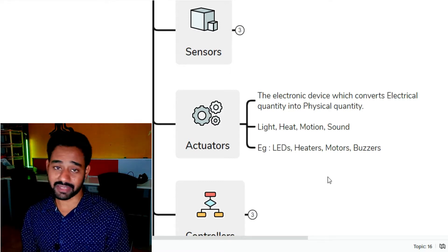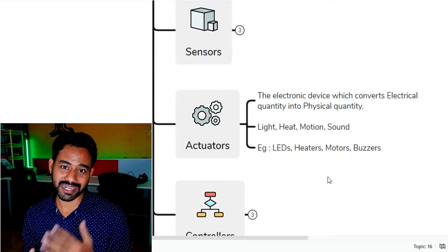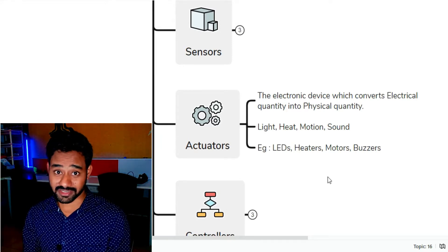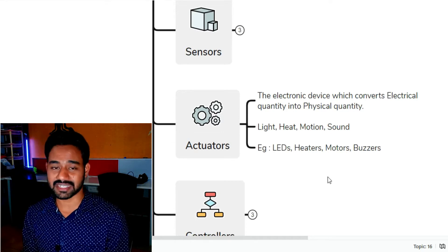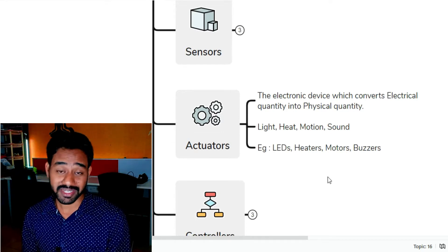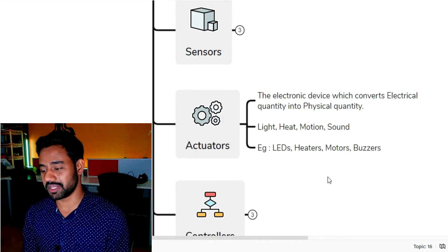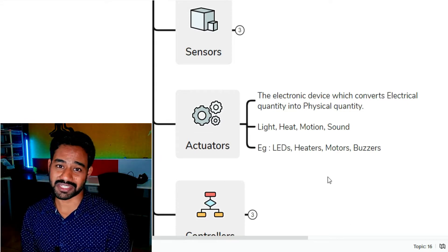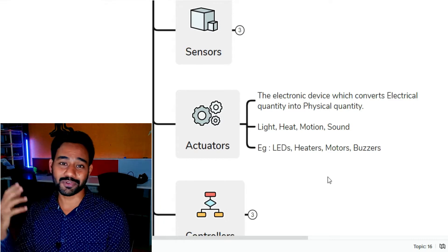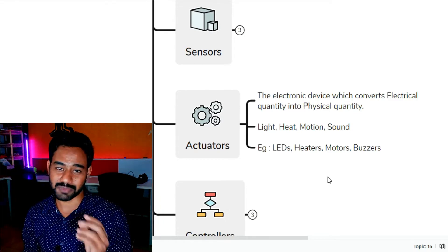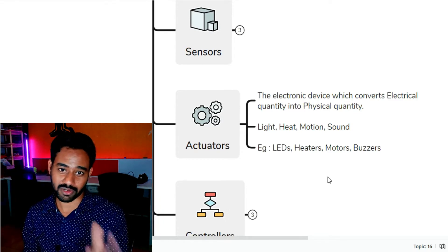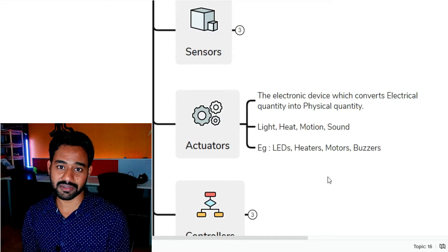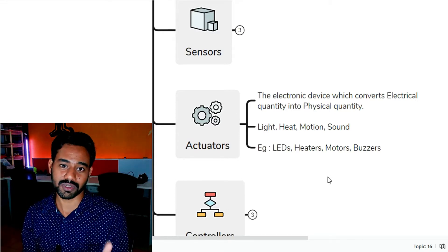Examples of actuators include LEDs, which are the most popular and easy to understand; heaters in our homes, which convert electrical energy into heat energy; motors, which are a wonderful innovation that convert electrical signals into specific rotation or movement; and buzzers, which are a kind of speaker converting electrical signals into sound energy.